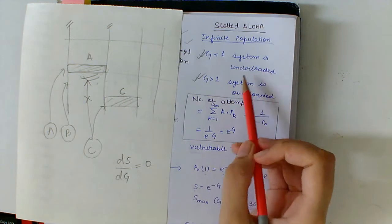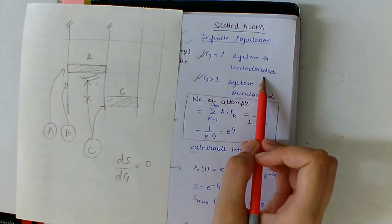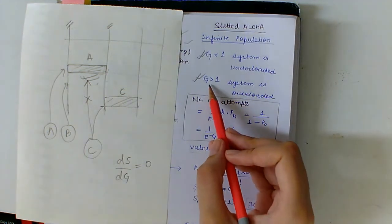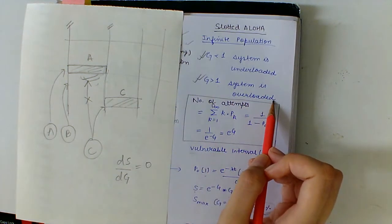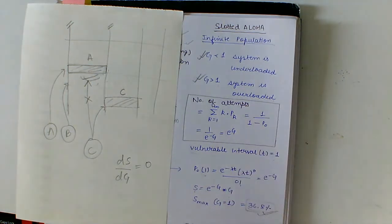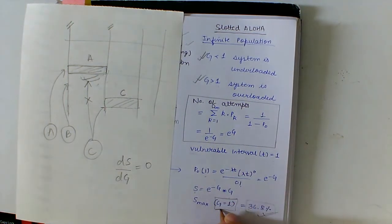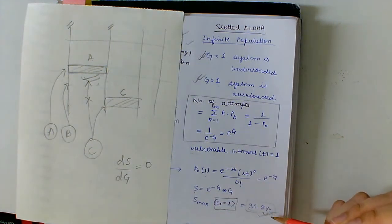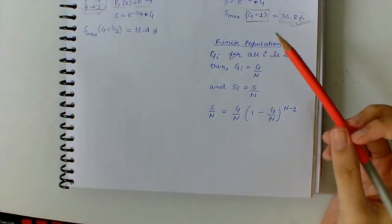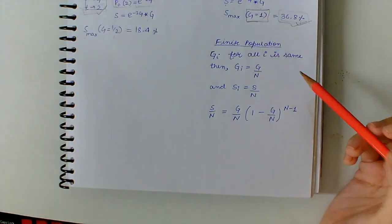And for infinite population Slotted ALOHA, we have these two conditions: if G is less than 1, the system is underloaded, so we get poor performance. And if G is greater than 1, that means the system is overloaded, and due to that we also get poor performance. So whenever G is equal to 1, we get the best possible performance, giving Smax equal to 36.8%.